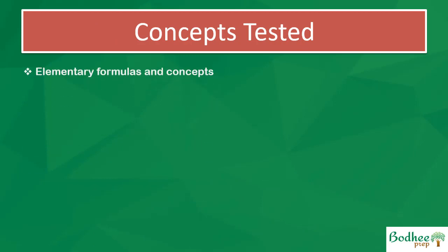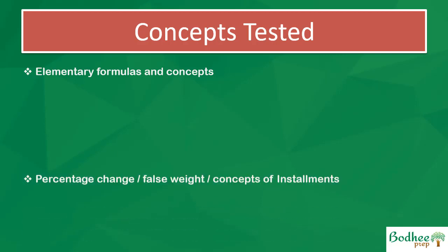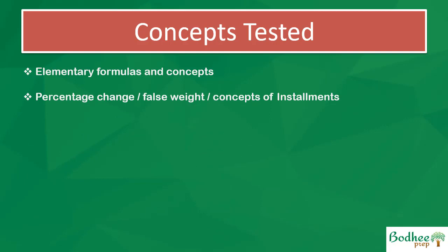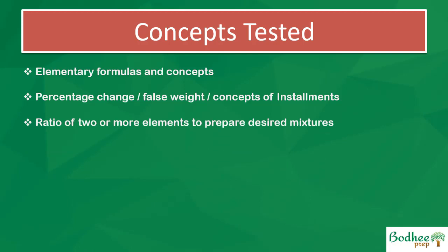In terms of concepts tested, elementary formulas and concepts are assessed — how to find profit, how to find loss, how to find profit percentage and loss percentage, percentage increases and decreases, and so on. Percentage change, false weight, and concepts of installments are some things to keep in mind. Ratio of two or more elements to prepare desired mixtures is also tested — for example, mixing milk with water in a certain ratio and calculating profit or loss incurred by the milkman.